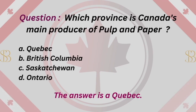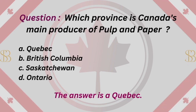Question: Which province is Canada's main producer of pulp and paper? A. Quebec. B. British Columbia. C. Saskatchewan. D. Ontario. The answer is A. Quebec.